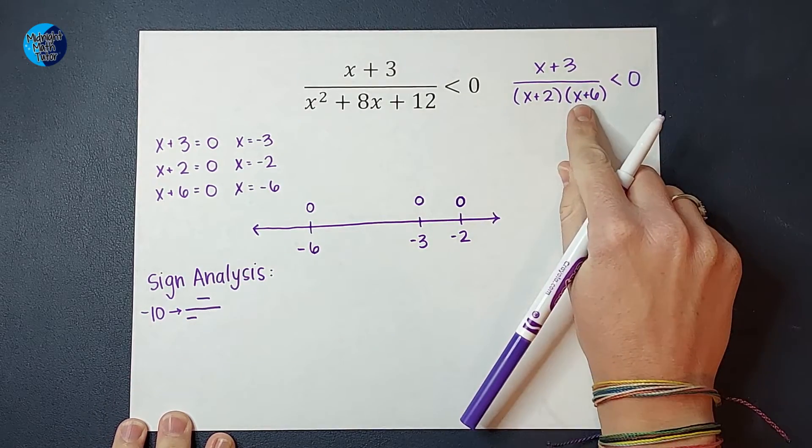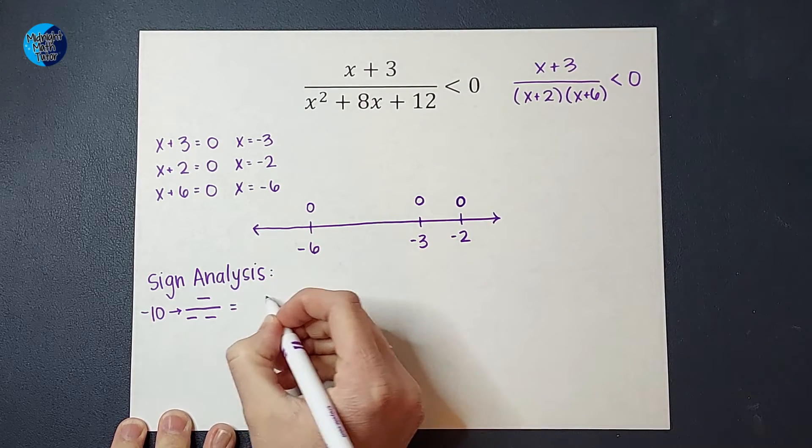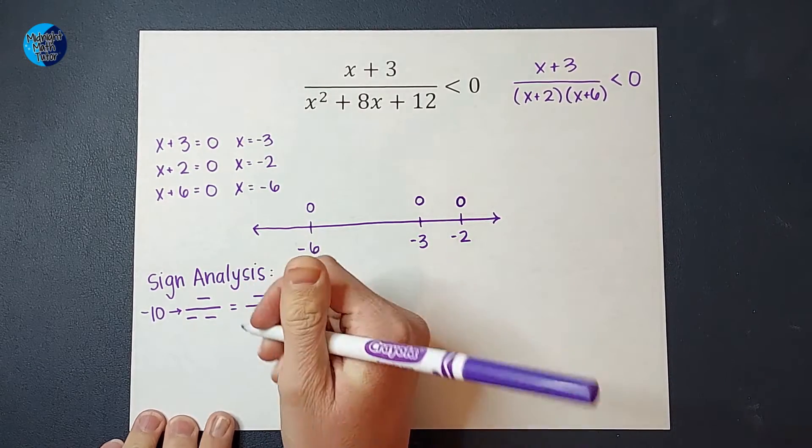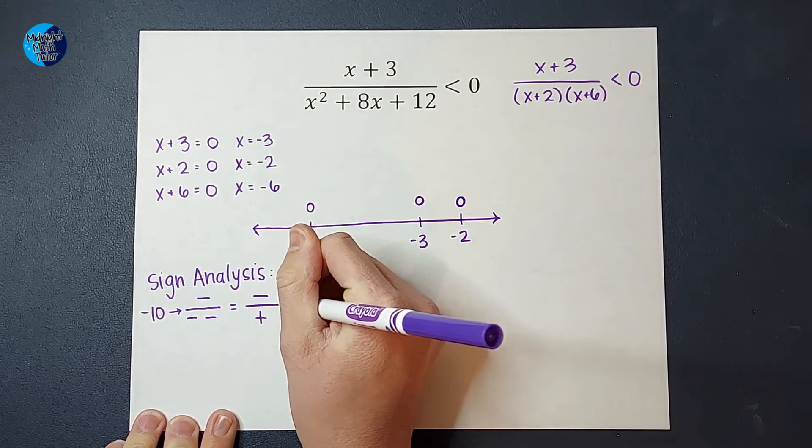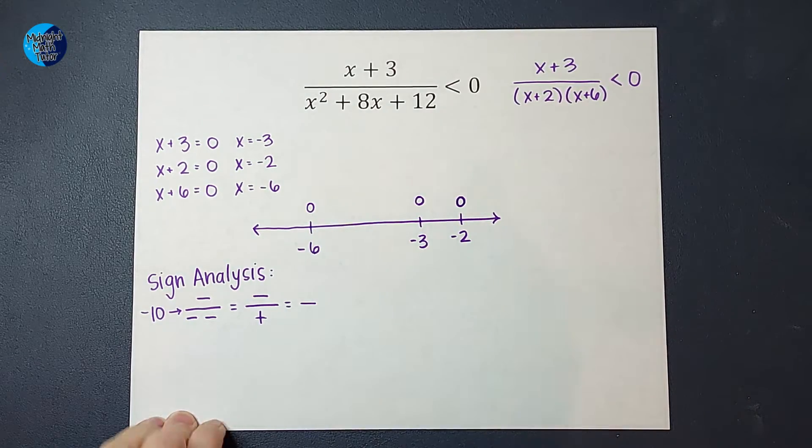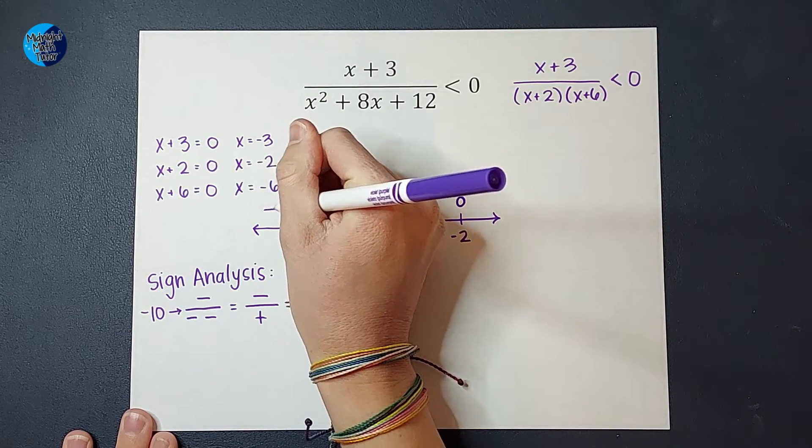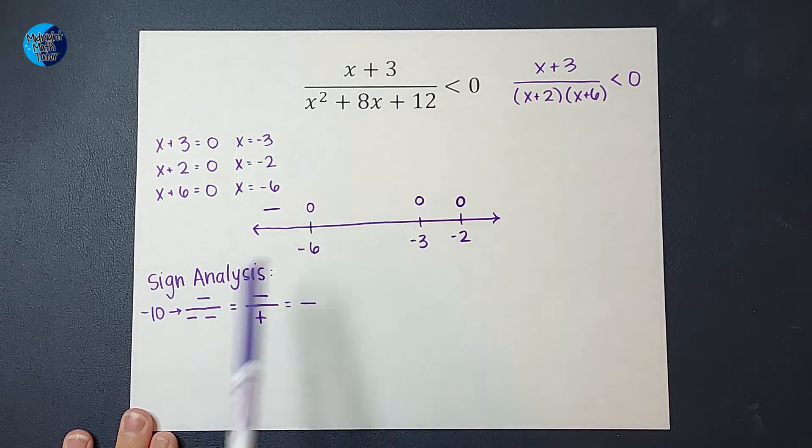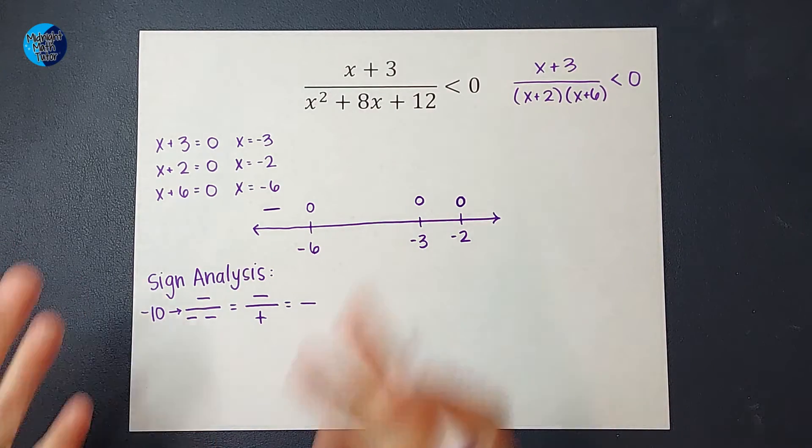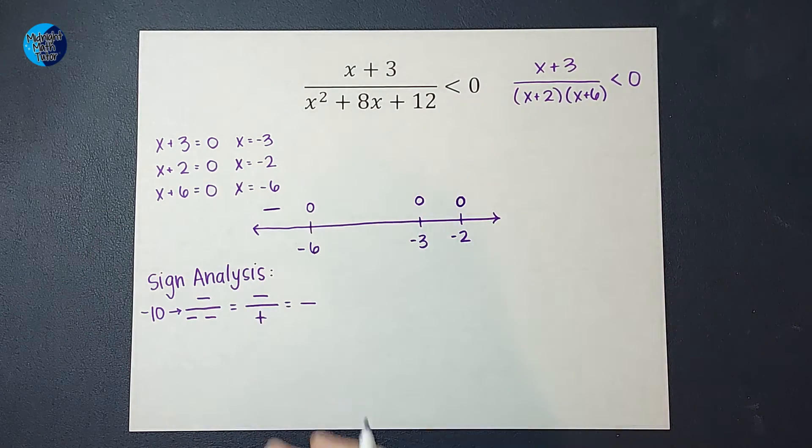Negative 10 plus 6, which would give me another negative. So then on top, I have a negative. On bottom, I have a negative times a negative, which gives me a positive. And then a negative divided by a positive is negative. So this region to the left of negative 6 is negative. Now, if you didn't like that whole sign business we did, and you want to figure out the actual number, go for it. But all we really need to know is that it's negative.